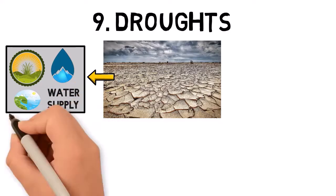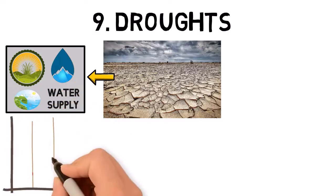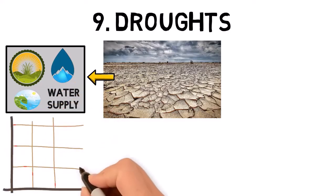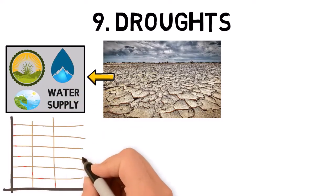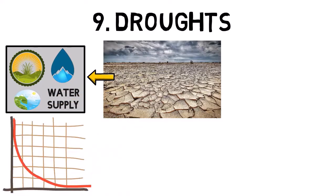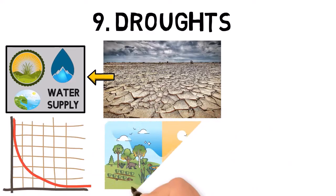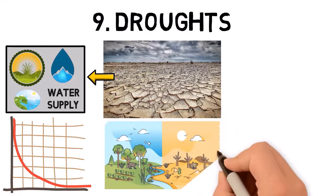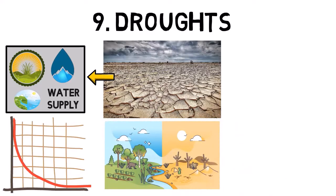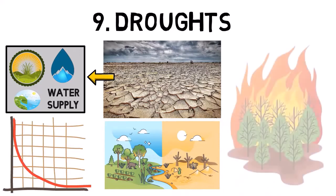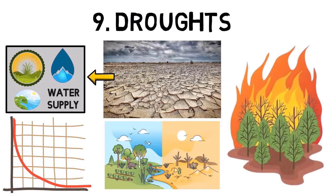Droughts can lead to crop failures, food shortages, and economic losses. In severe cases, droughts can lead to desertification, where fertile land becomes barren. Droughts also increase the risk of wildfires, as dry conditions make vegetation more flammable.